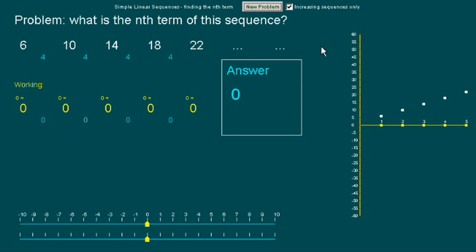This is a clip to show you how to use the Waldo Maths program or applet called Simple Linear Sequences to find out what the nth term of a sequence is. Let's start straight away.